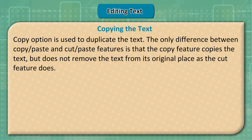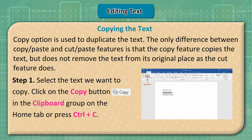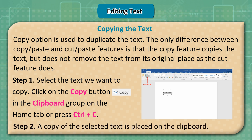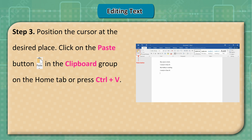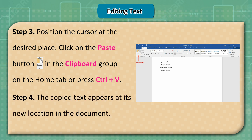Copying Text: The Copy option is used to duplicate text. The difference between copy/paste and cut/paste is that copy does not remove the text from its original place, as cut does. Step 1: Select the text, then click Copy in the Clipboard group on the Home tab or press Ctrl+C. Step 2: A copy is placed on the clipboard. Step 3: Position the cursor at the desired place and click Paste or press Ctrl+V. Step 4: The copied text appears at its new location.